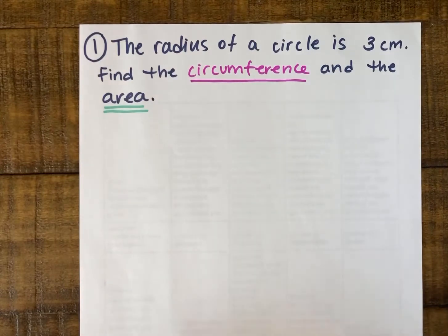All right, so my first problem: the radius of a circle is 3 centimeters. Find the area and the circumference of that circle.